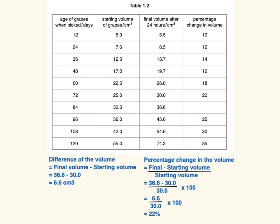When calculating percentage change, find the difference: final volume minus starting volume, which is 36.6 minus 30 = 6.6 cm³. Then divide by the starting volume and multiply by 100: 6.6 ÷ 30 × 100 = 22%. Always remember to add the unit — which is % — for your answer.